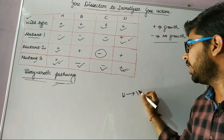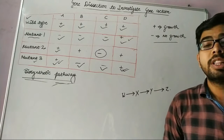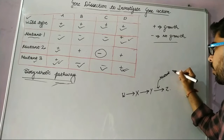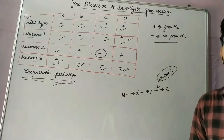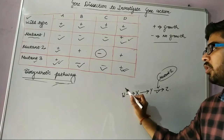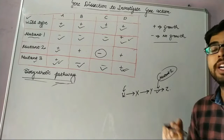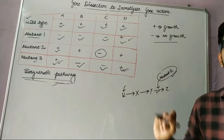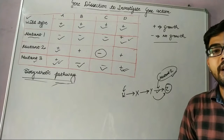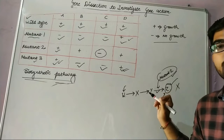Let us take another pathway: W is converted into X, X into Y, and Y into Z. Mutant 2 contains a mutation at this site. When compound W is added, W is converted into X and X is converted into Y, but mutant 2 will not allow Y to convert into Z. Therefore, compound Z is not produced, and there is no growth, since Z is necessary for growth of the organism.